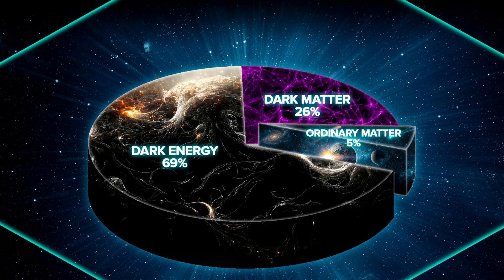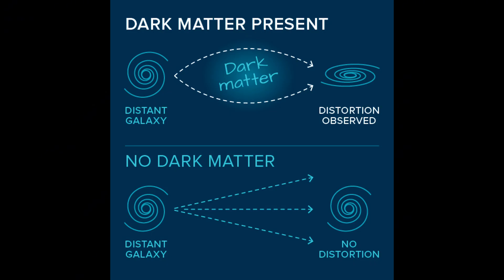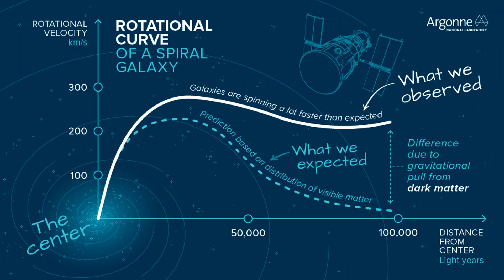Together, dark matter and dark energy make up 95% of the universe, leaving just 5% for the ordinary matter that we can see and touch. Understanding how dark matter and dark energy interact could be key to unlocking the deepest secrets of the cosmos. Some theories suggest that they might be connected, but the nature of this connection remains one of the greatest puzzles in modern science.